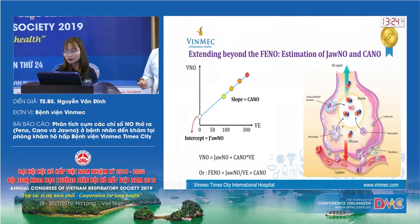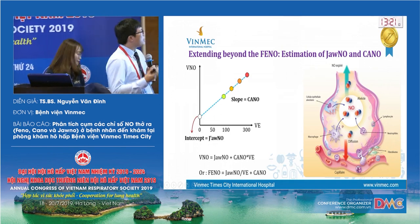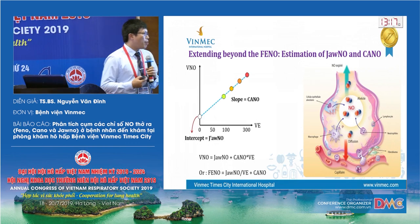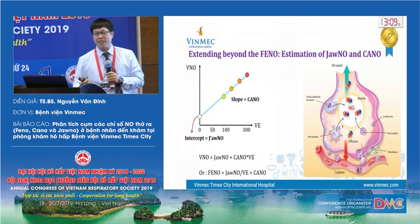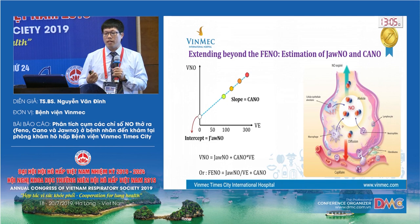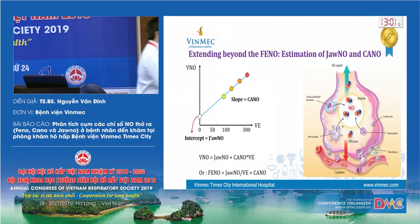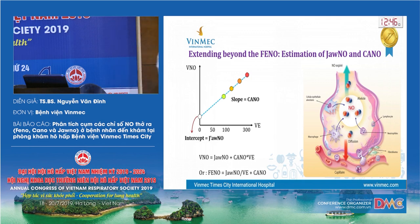With FeNO, we have nitric oxide from the airway. From the equation here, you can see the FeNO is just NO from the airway and NO with the CANO from the graph. We have here corresponding values for the J-aw-NO from the airway, and with the slope that is CANO, we have the FeNO.